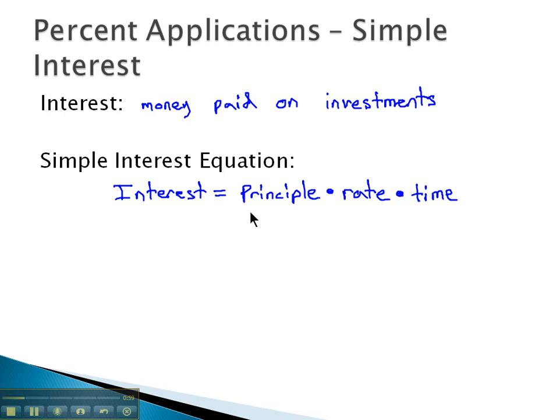Now, a couple important points about this formula. Principal, that's the bank word for the starting amount in the account. As always, rate must be written as a decimal. And the new variable in this equation is time, and this is very important. Time must be in years.